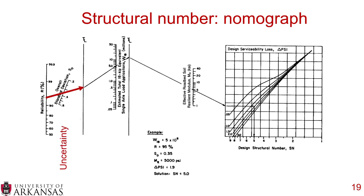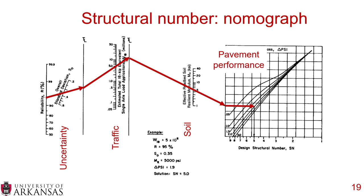The structural number is found by solving a nomograph from the 1993 AASHTO pavement design guide. On the left, you have uncertainties — reliabilities and overall standard deviations. You connect the dots: draw a line through reliability and standard deviation, pivot at the turn line, draw through traffic in ESALs — equivalent single axle load applications — then through the effective roadbed soil resilient modulus M_R, then through the pavement serviceability index. Drop down and you get the structural number.